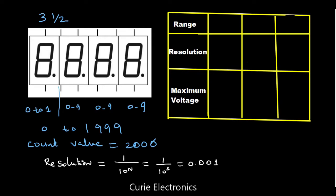Now, the count has doubled, so our range also doubles. Instead of 1 volt range, we are going to get a 2 volt range. For 2 volt range, the resolution is 2 upon 2 times 10 to the power 3, which equals 0.001. The maximum voltage we can measure is 1.999 volt.